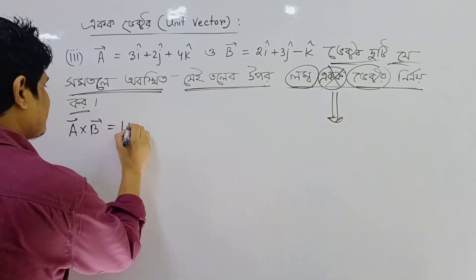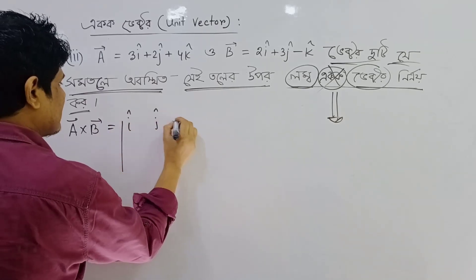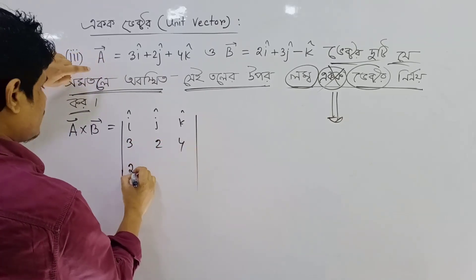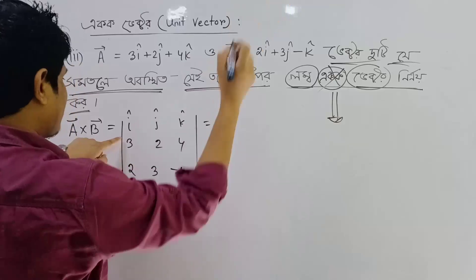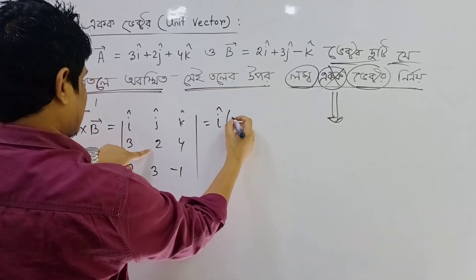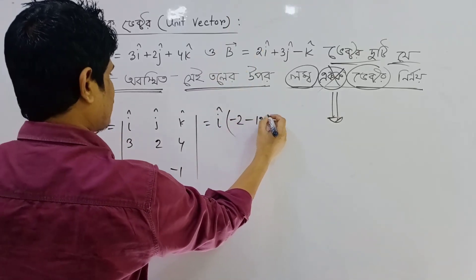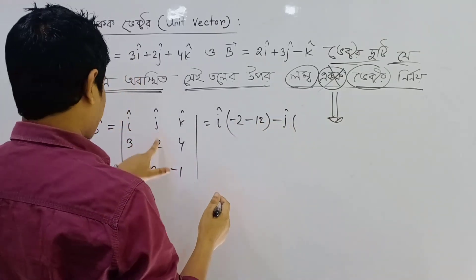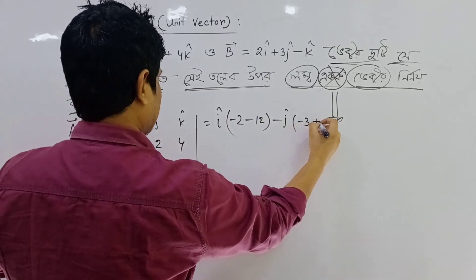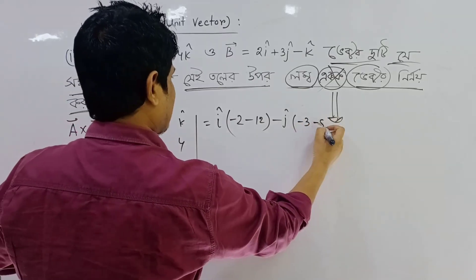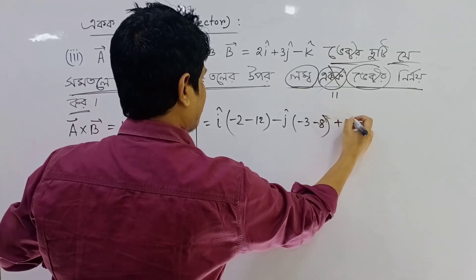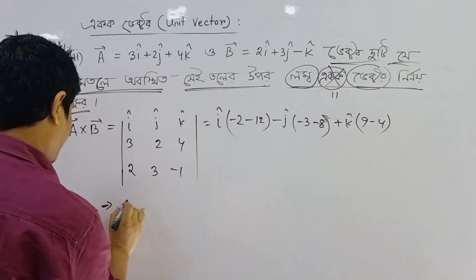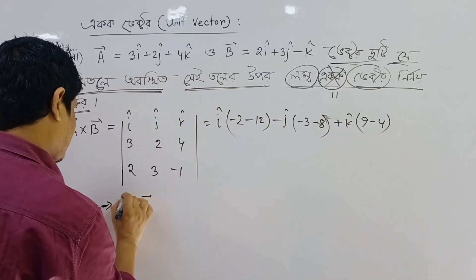A cross B — with components I, J, K. Using values 3, 2, 4 and 2, 3, minus 1 — cross product calculation: I gives minus 2 minus 12, minus J gives plus 0 minus 0, plus K gives 9 minus 4.